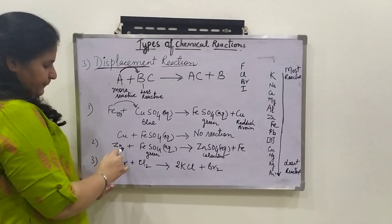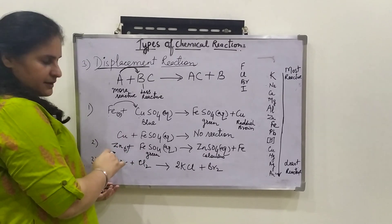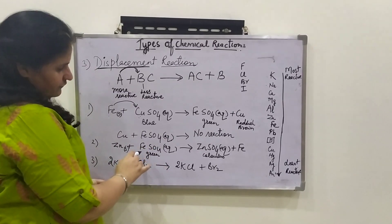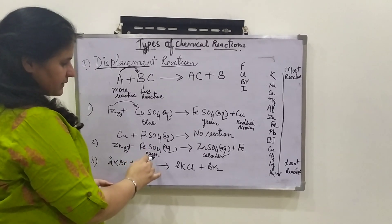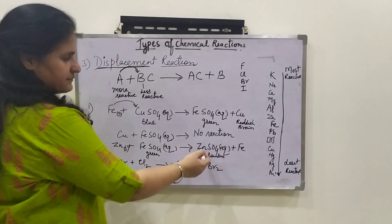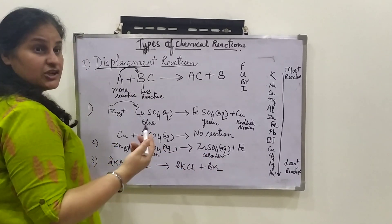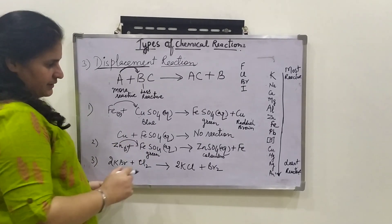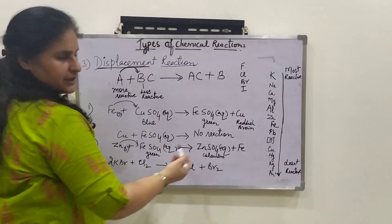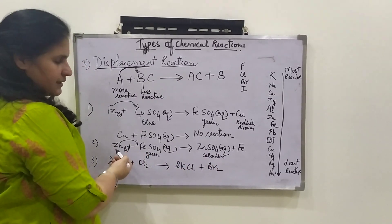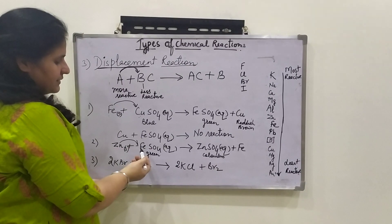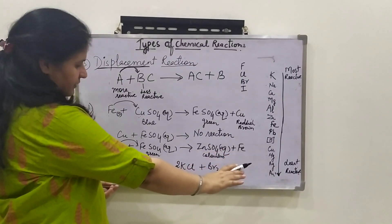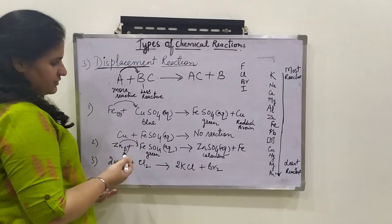The other example is zinc. When zinc metal is placed in an aqueous solution of iron sulphate, which is green in colour, after a while it becomes colourless, again indicating that some change has taken place. Here zinc has taken the place of iron, so a zinc sulphate colourless solution is obtained. Zinc is more reactive than iron, so zinc takes the place of iron and iron is left out. This is all indicating a displacement reaction.